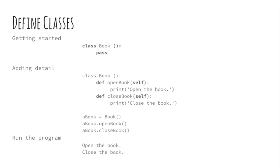Here are some code snippets illustrating the evolution of an implementation of a class named Book. Class definitions begin with the keyword class, followed by the class name, a parenthesized list of parent classes, a colon, and one or more indented statements.